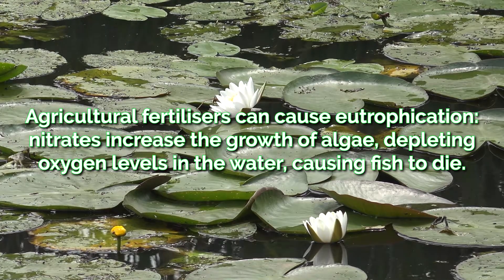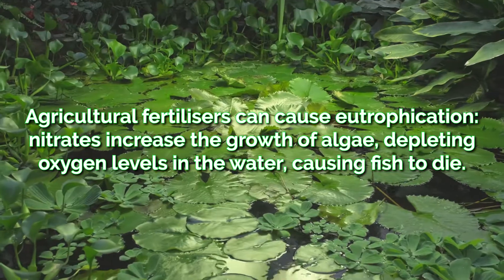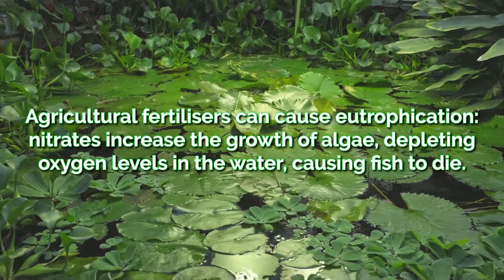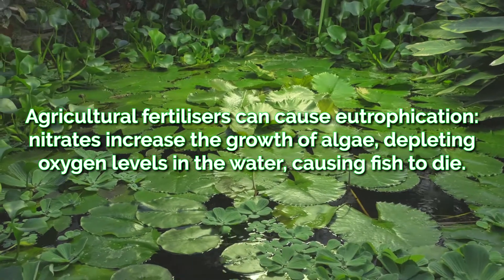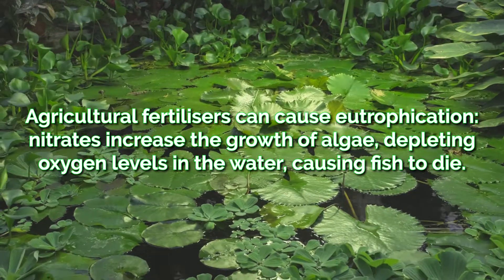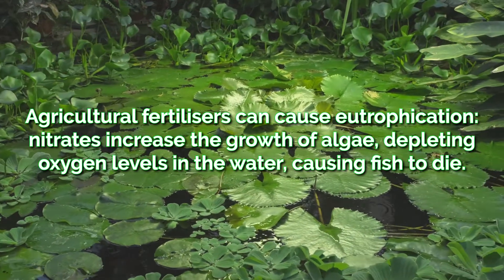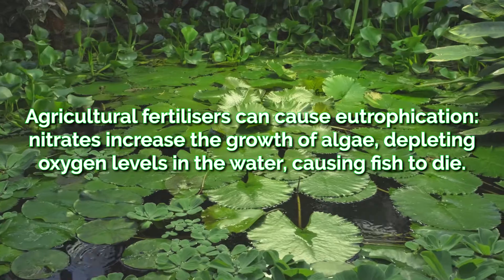Agricultural fertilisers can lead to a process known as eutrophication, where nitrates increase the growth of algae, depleting oxygen levels in the water, which can cause fish to die.